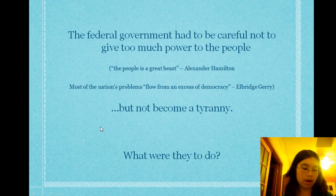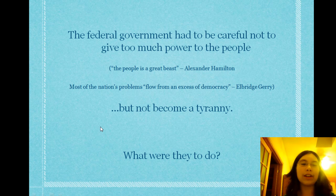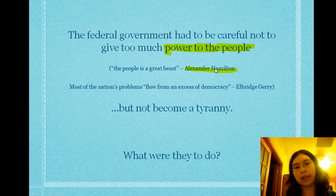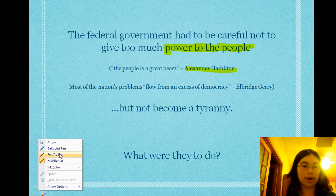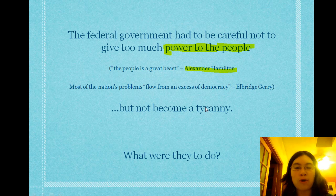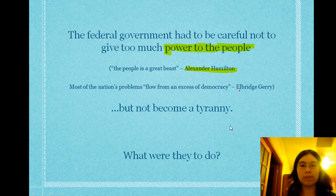The Constitution was moving forward, but there were still issues. The federal government had to be careful not to give too much power to the people. Not all the Founding Fathers thought 'power to the people' was awesome. Alexander Hamilton, first Secretary of the Treasury who founded the National Bank, once said 'the people is a great beast.' And Elbridge Gerry, another Founding Father, stated: 'Most of the nation's problems flow from an excess of democracy.' So they clearly had some issues with the idea of people getting too much power.